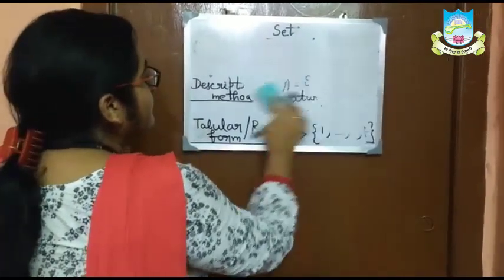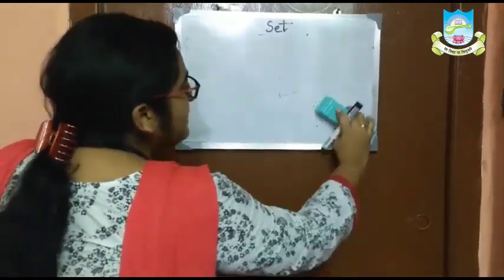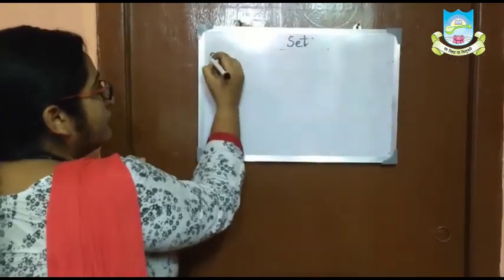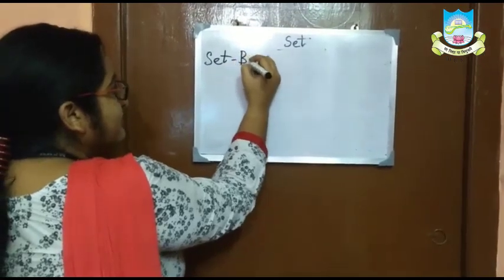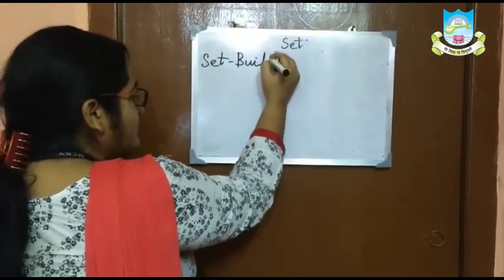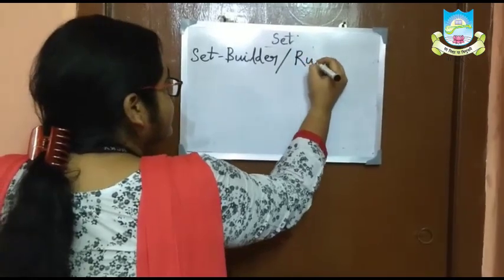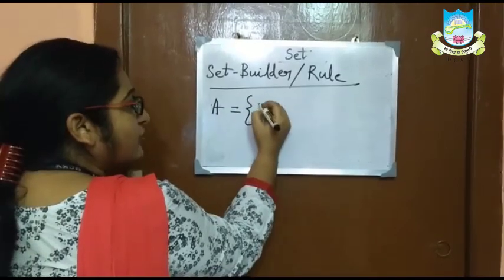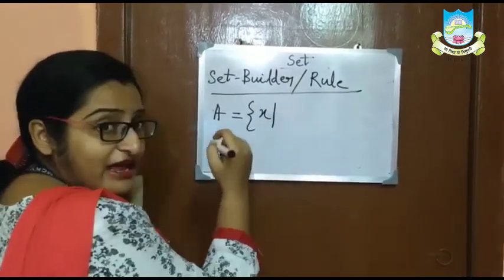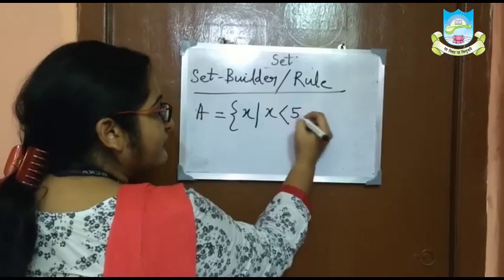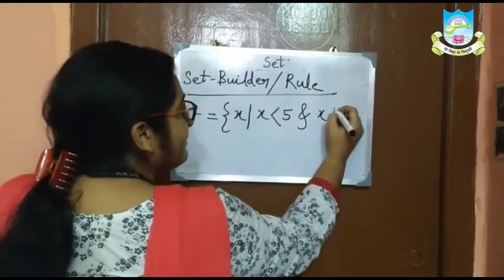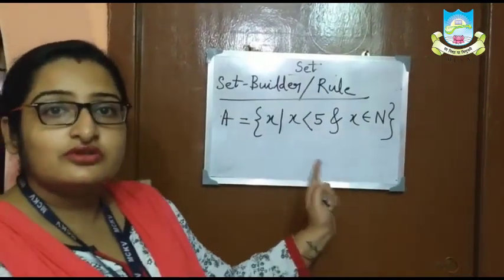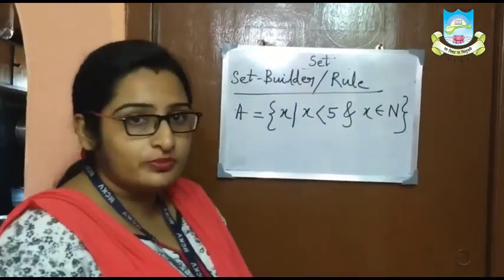There is another method known as set builder method or rule method. In set builder method, if we write the same set, it is written as: set A is a set of X such that X is less than 5 and X belongs to the set of natural numbers. This is called set builder method or rule method.